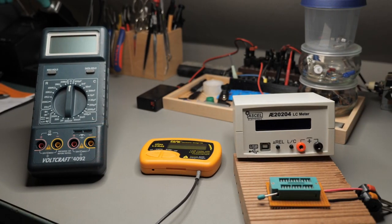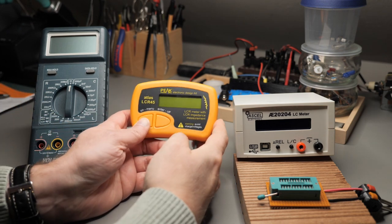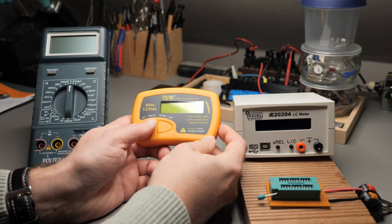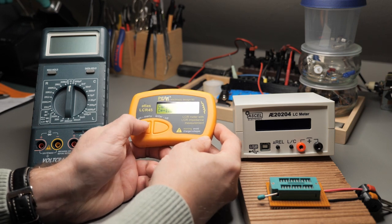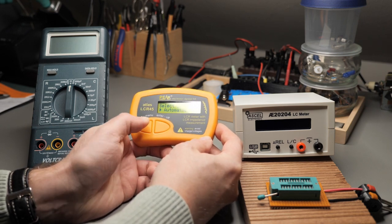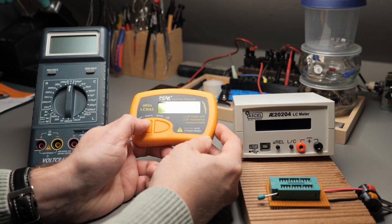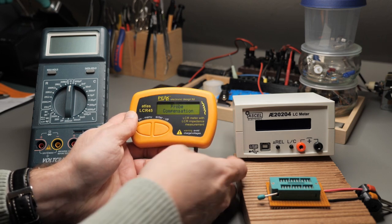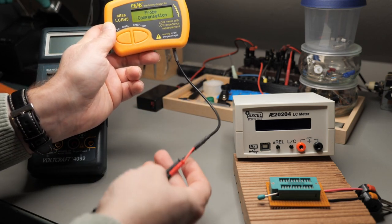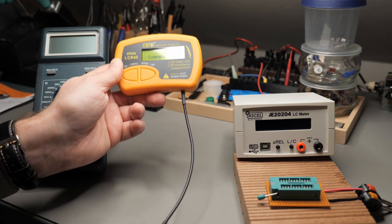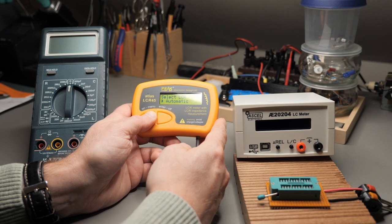Okay so before we start the test let's do some calibration. So the Peak Atlas, you can turn it on with a single click and currently it's in auto mode. Press and hold the menu for two seconds and then you can cycle through the menu and there's a probe compensation mode which basically compensates for the capacitance or inductance of the connection lead.